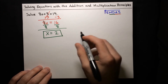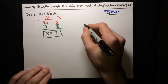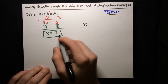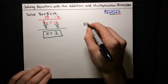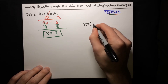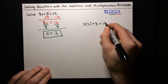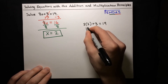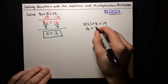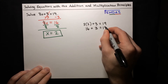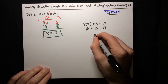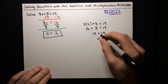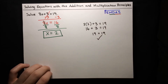So let's check it to make sure we did everything right. We'll plug it in: 8 times x — in this case x is 2 — so 8 times 2, plus 3 equals 19. Does that check out? Well, 8 times 2 is 16, and then 16 plus 3 — does that make 19? Yes, 16 plus 3 is 19. Great, so that's equal to 19, and we can be sure our answer is correct.